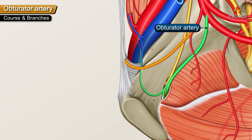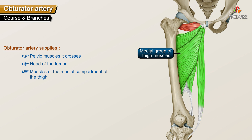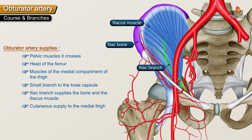The obturator artery supplies the pelvic muscles it crosses, the head of the femur, and the muscles of the medial compartment of the thigh, giving a small branch to the knee capsule. The iliac branch supplies the bone and the iliacus muscle. It also has a cutaneous supply to the medial thigh.